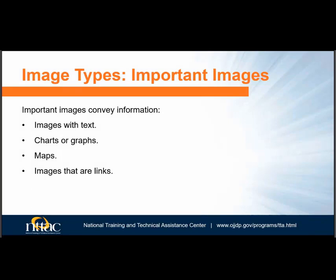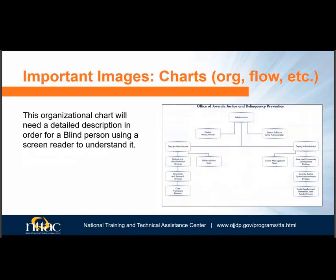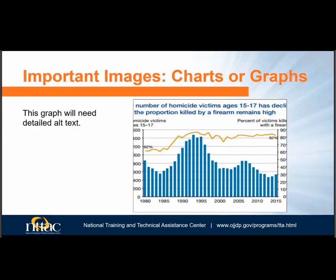Following are examples of important images. An image that is both linked and has text will need to be described to a blind person using a screen reader. Images of text, except for logos, are discouraged when text can be used instead. However, in the case of organizational charts, it might be necessary to use an image of text — in that case the image must be described in full, including the relationships. On the OJJDP website, an organizational chart is used and it is described in detail on the same page. Charts and graphs need detailed alt text describing all data points.